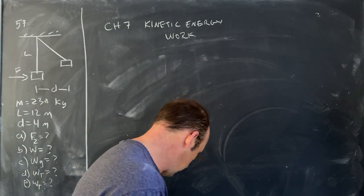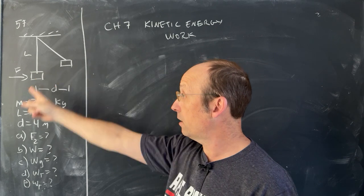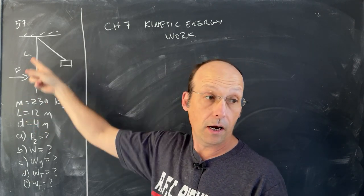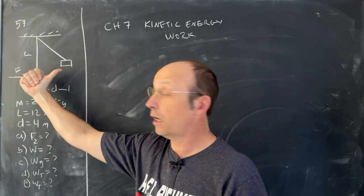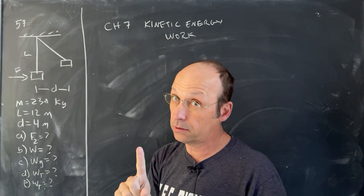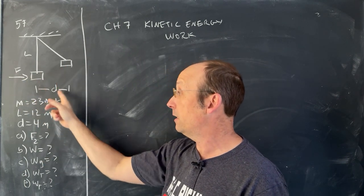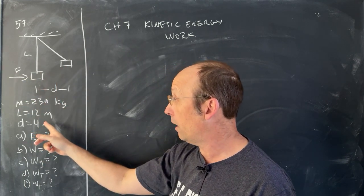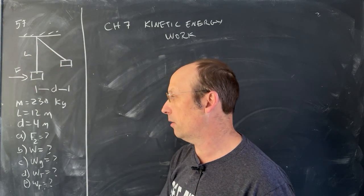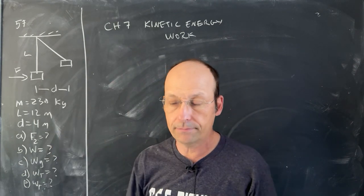So the problem is a crate with a mass of 230 kilograms is hanging from a string and then it's pushed with a horizontal force, non-constant force, and it would have to be non-constant. So that the crate moves up to this position a distance four meters away, horizontally, and the length of the string is 12 meters. And then ask questions about what's the force, what's the work done by gravity. We're going to solve that.